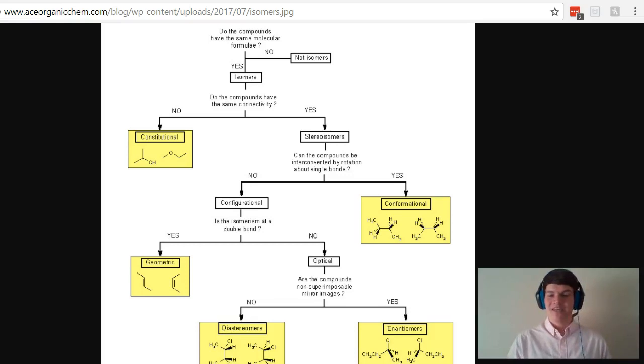Next we ask ourselves if the compounds have the same connectivity. If they don't, then they're constitutional isomers. Think about it as being structural differences for constitutional isomers. They have the same exact components, but we created the structure in a different way. If you answer yes to this question, we know we're dealing with a stereoisomer.